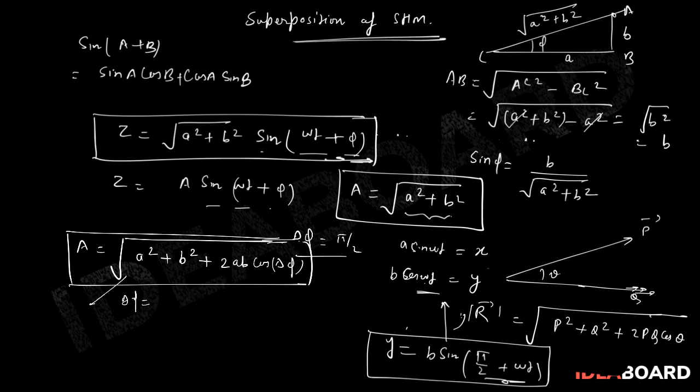Now, in this equation, if you put delta phi as 0, we achieve A is equal to, this term will become A plus B. This will become A square plus B square plus 2AB, which is nothing else, A plus B.